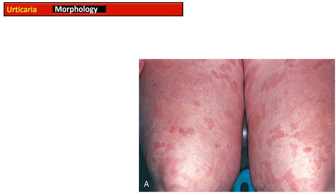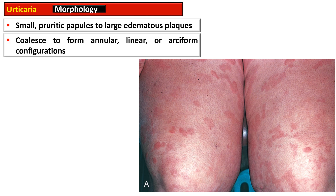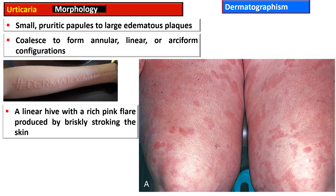The morphology of urticaria is variable, ranging from a small pruritic papule to large edematous plaques. These papules or plaques may coalesce to form annular, linear, or arciform configurations. In this picture there are numerous erythematous, edematous, and circular plaques. There is another term — dermatographism — which is a linear wheal.